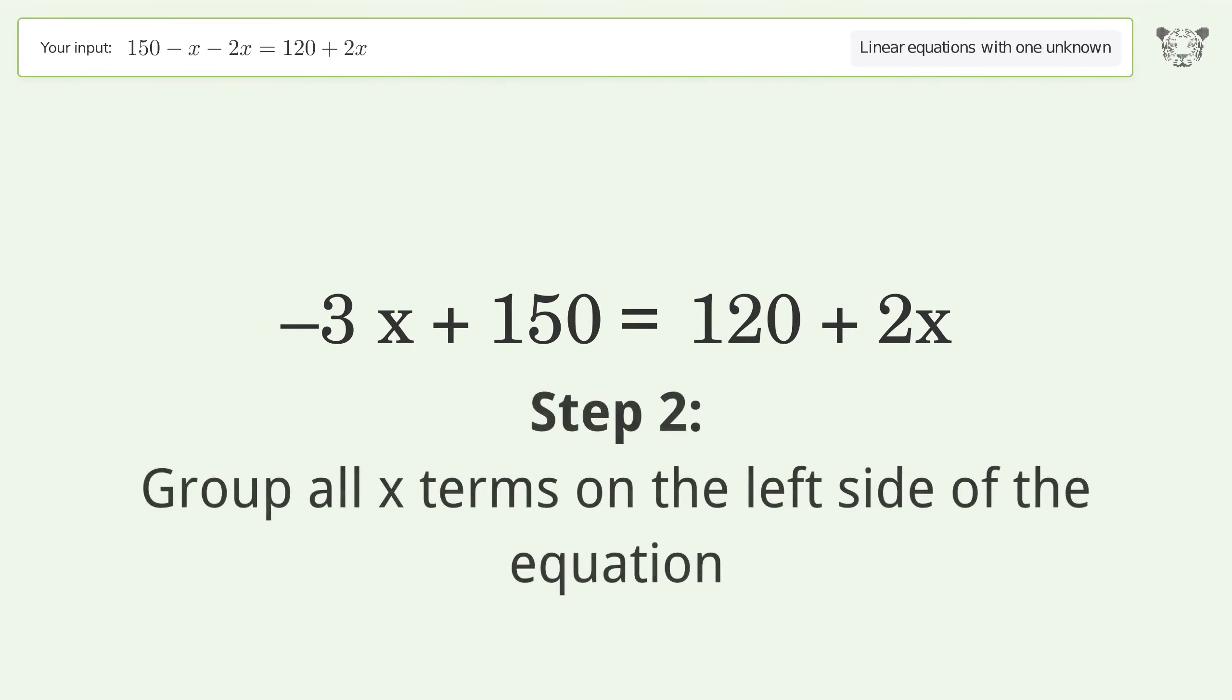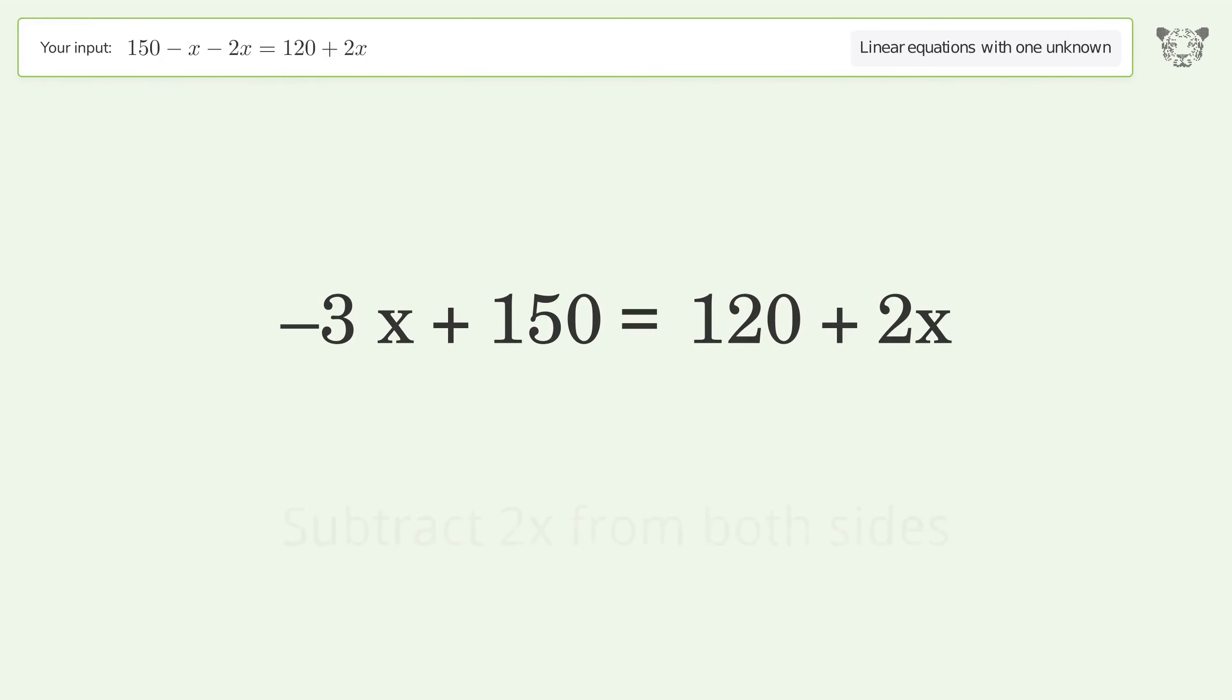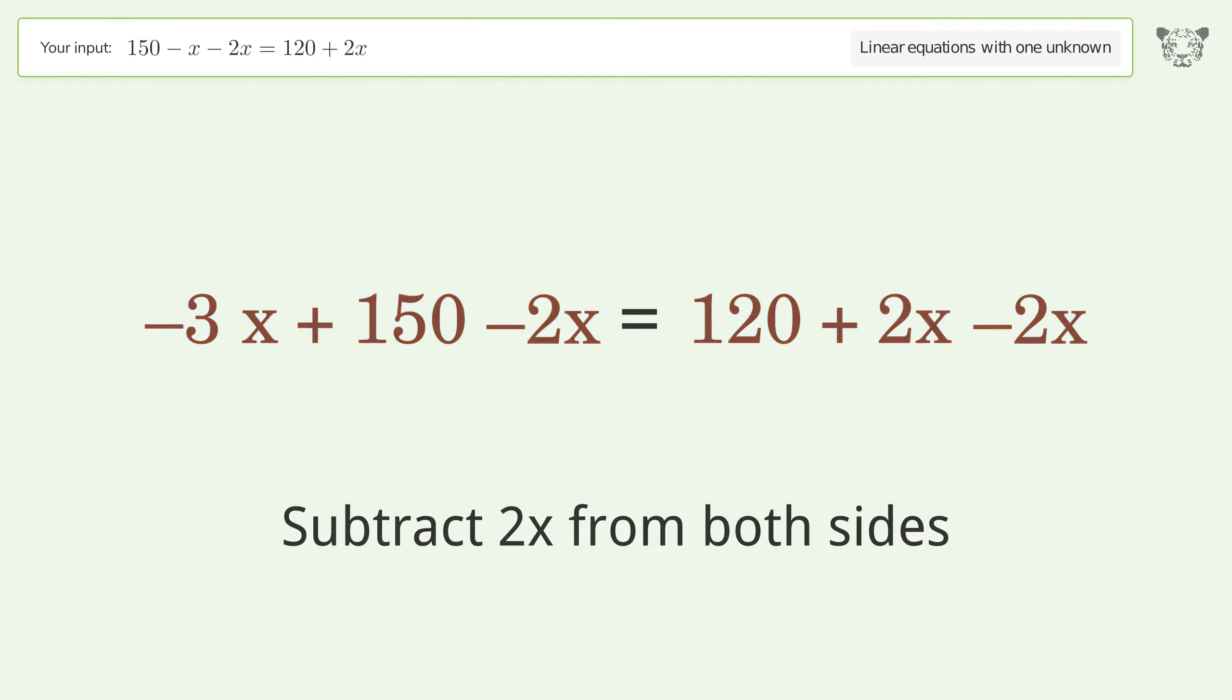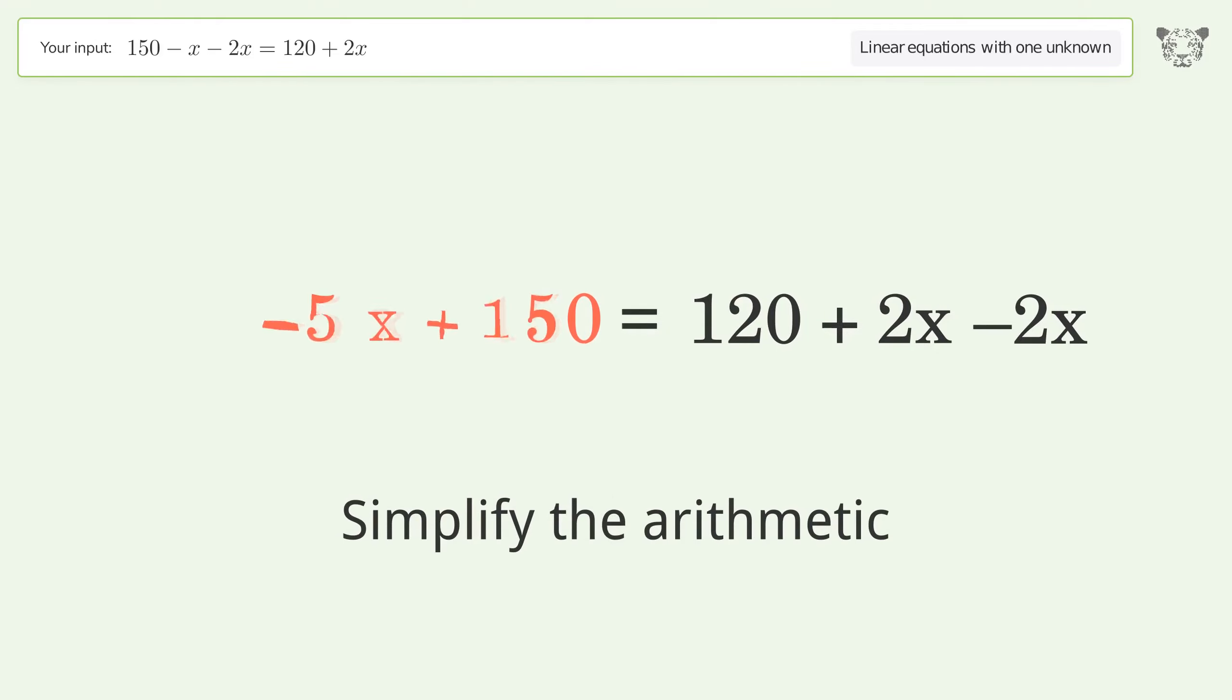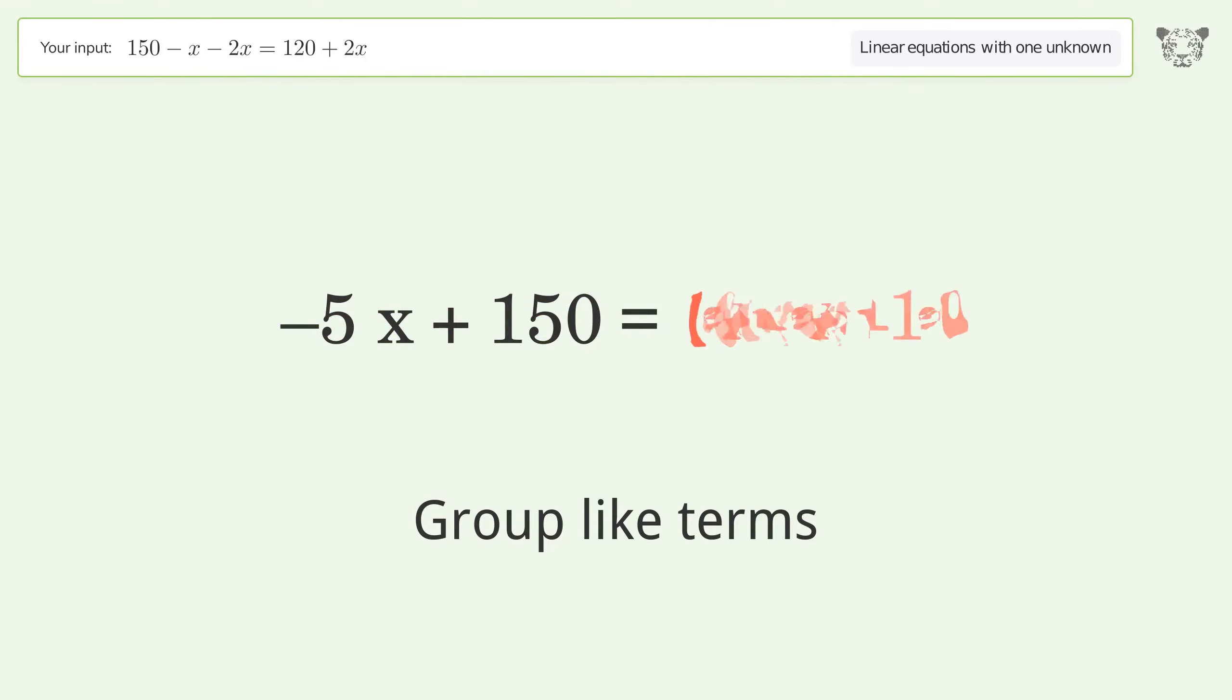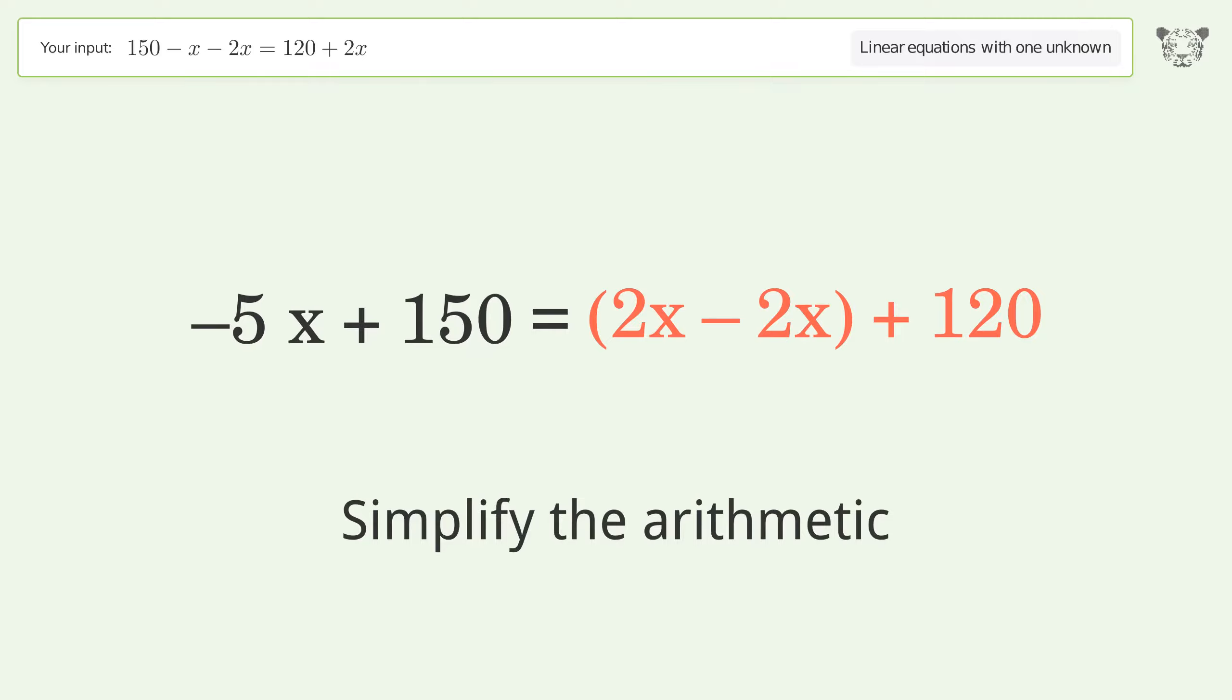Group all x terms on the left side of the equation. Subtract 2x from both sides. Group like terms and simplify the arithmetic.